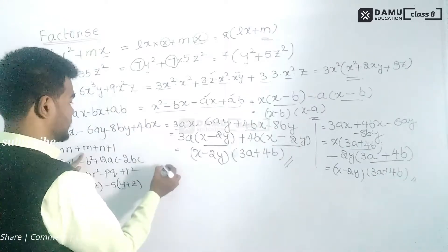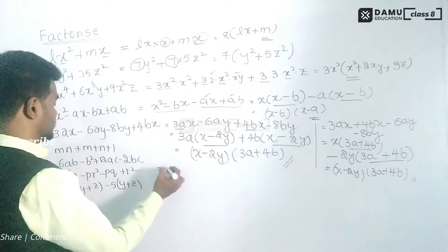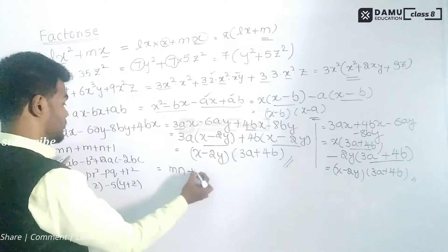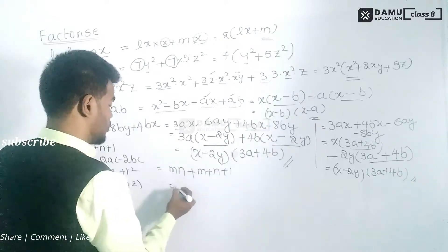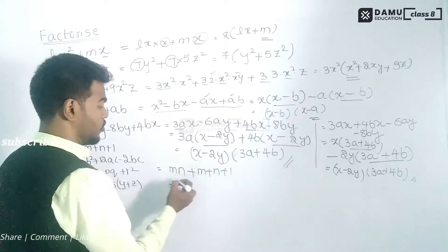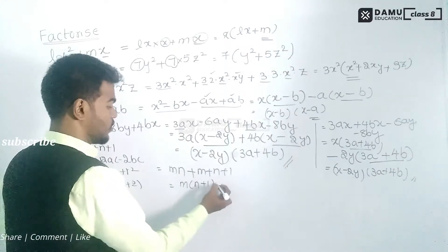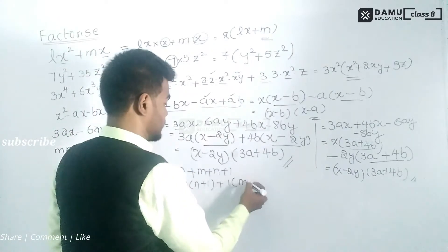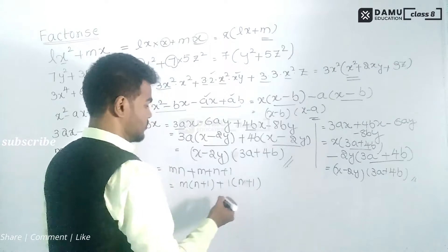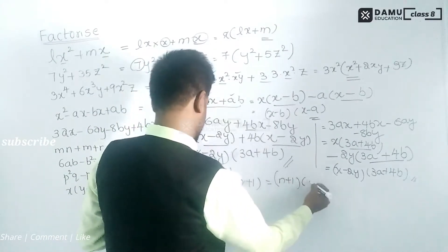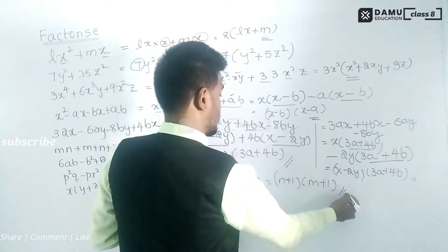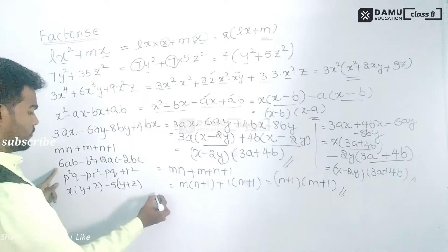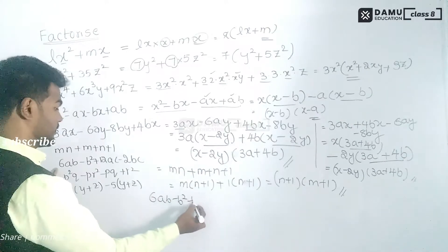The next question involves mn + n + m + 1. We group mn + n together and m + 1 together. From mn + n, take m common — wait, take n common to get n(m + 1). From m + 1, take 1 common to get 1(m + 1). So (m + 1) is common, giving the factorized form (m + 1)(n + 1).